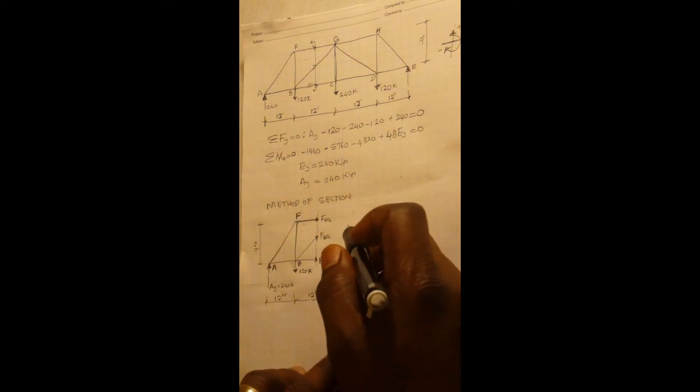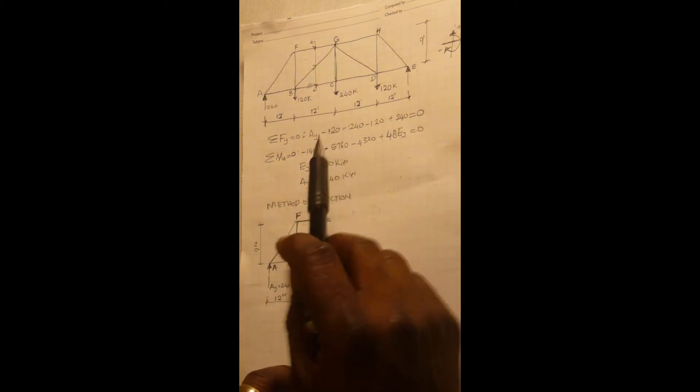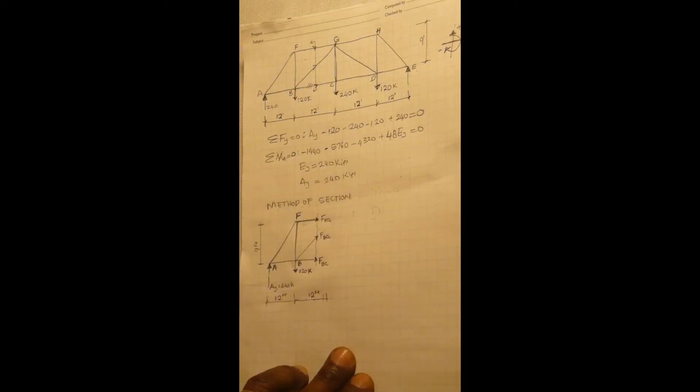So we are taking a moment about a point from the original truss joint. The joint at G seems to be a common point where we can eliminate two of the members that appear along this cut.